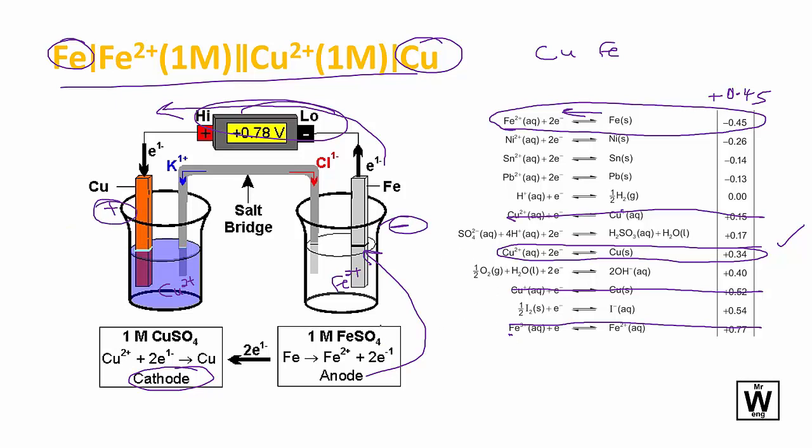The electrons are coming off here and they're being attracted here naturally because it's a galvanic cell. This is positive because the copper is taking them away. You can see there's a layer of copper being formed here, and this one is getting smaller.